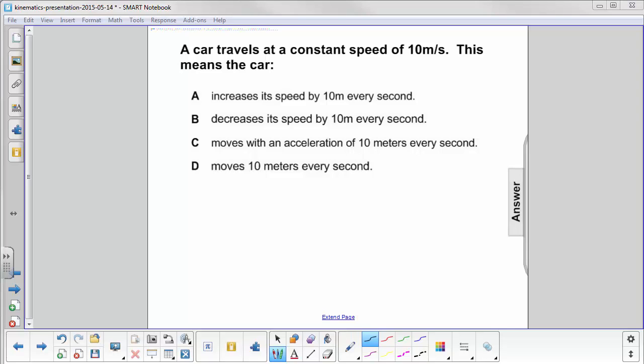A car travels at a constant speed of 10 meters per second. This means the car increases its speed by 10 meters every second, decreases its speed, moves with an acceleration of 10 meters every second, and moves 10 meters every second.